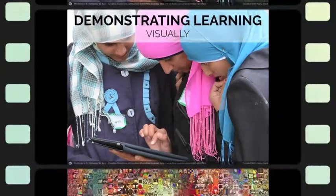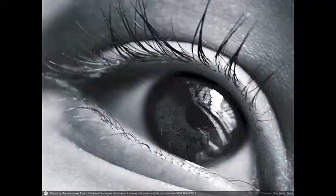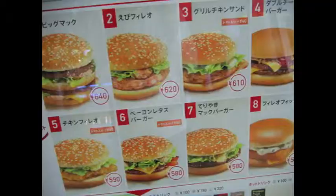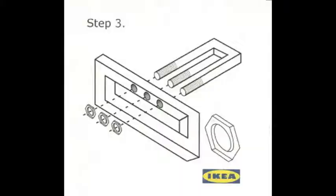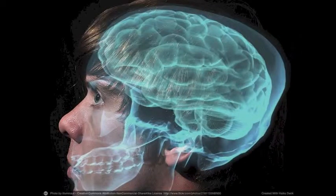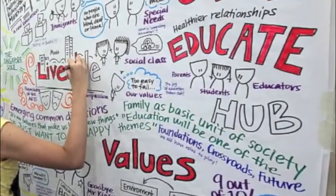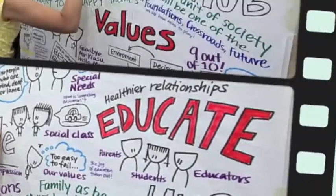We live in a rich and visually dominated world. Every day we are surrounded with imagery that helps us interpret and understand what's around us. Visual processing takes up well over 50% of the brain in most people. What percentage of your class are visual learners? With this knowledge, shouldn't we be using the visual sense more in our teaching?